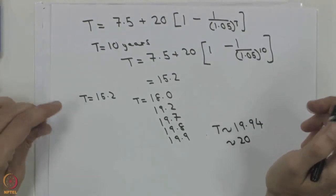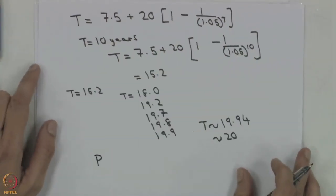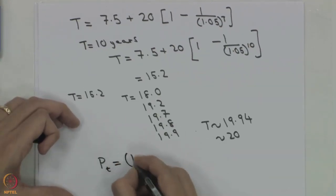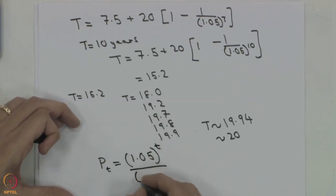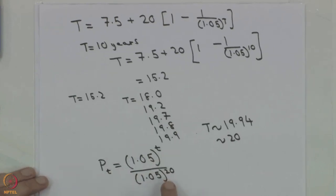The resource gets exhausted at approximately 20 years. Substituting back, we get P_t equals (1.05 raised to t) divided by (1.05 raised to 20). We can then substitute this expression into the demand curve to get Q_t for different time periods, and plot the time path of extraction for both P_t and Q_t versus time.